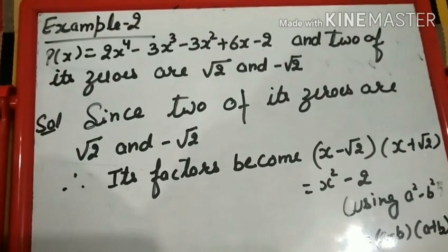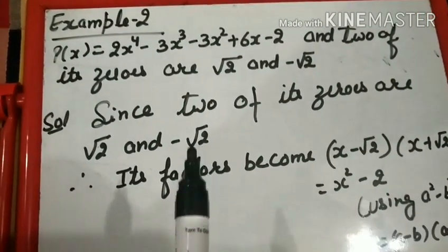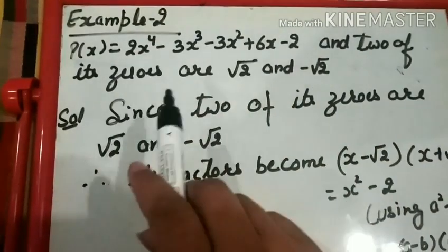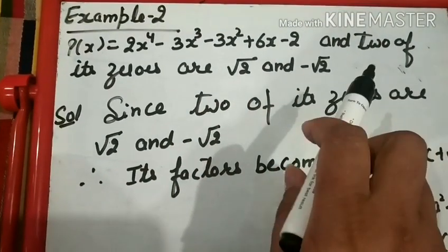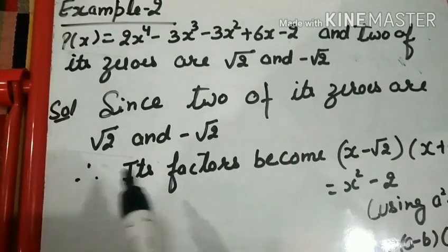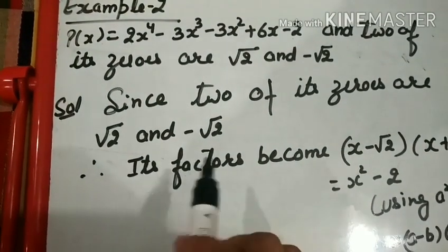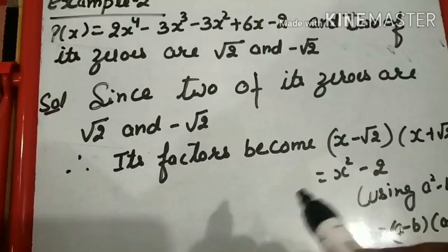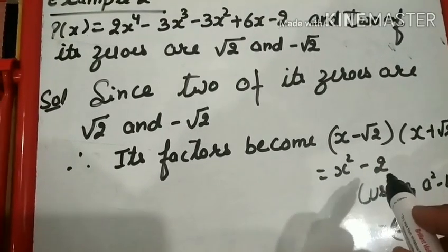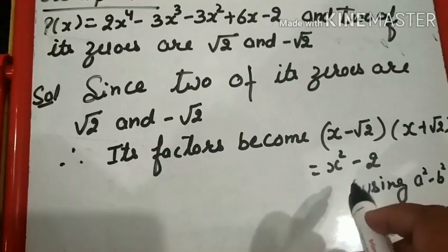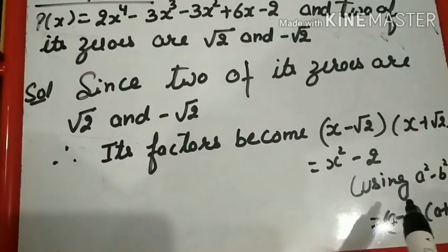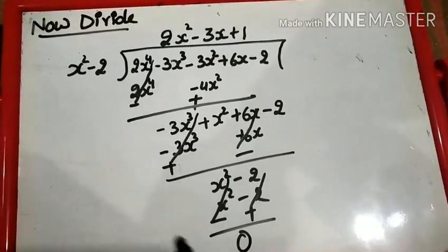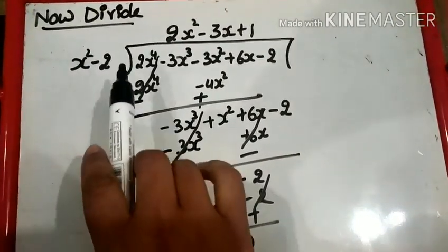Let us take one more example from the textbook. P(x) is given and two of its zeros are √2 and -√2. Since two zeros are √2 and -√2, their factors are (x - √2) and (x + √2). Using the identity a² - b², the root cancels and we get x² - 2. This is our factor of p(x).